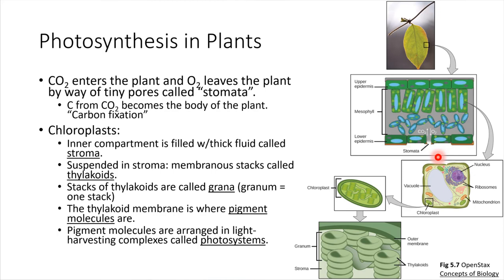So that stomata is what allows gas exchange to happen. Once the gas is inside of the plant, once CO2 has entered, you'll notice there are some other cells in here. These are special cells that have chloroplasts. All of those light green dots are representing chloroplasts inside of these cells.